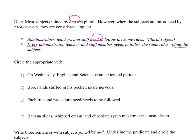Let's do a little bit of practice. Circle the appropriate verb. On Wednesdays — that's our prep phrase — English and science are extended periods. Because we have two subjects.